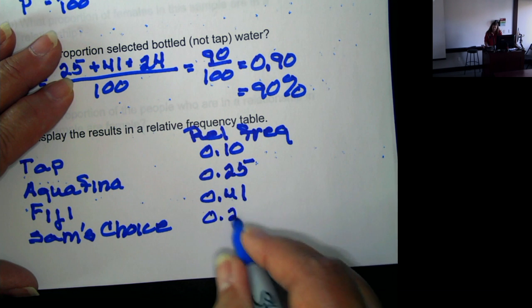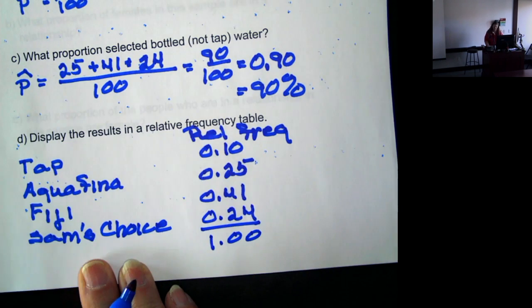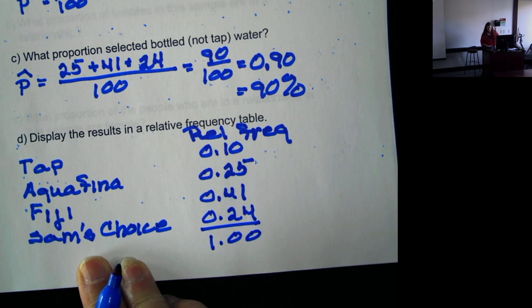Sam's choice is 24 over 100. Then when we add it up, we should get the entire amount, which is 1.